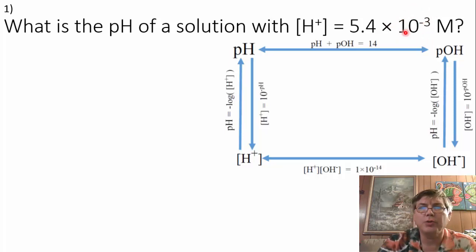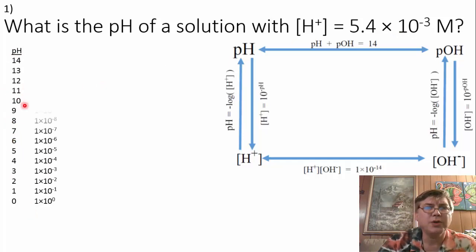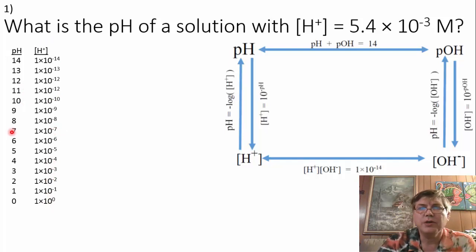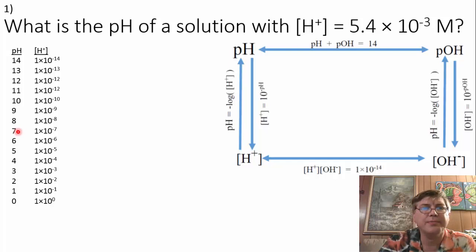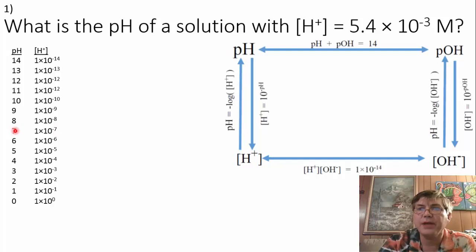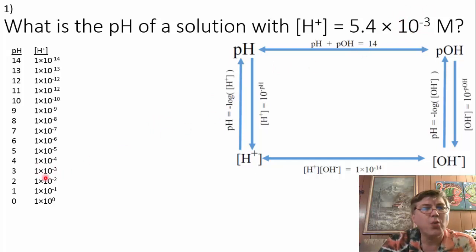You might remember when we did the foldable graphics organizer that we listed the pHs from 0 to 14 in the center and we also listed the hydrogen ion concentrations just to the right of that. You found that pH 7 matched up with the hydrogen ion concentration 1 times 10 to the negative 7. So the negative exponent — negative 7 — indicated that the pH was 7, just like pH 8 had a negative exponent in 1 times 10 to the negative 8. So if we look at 1 times 10 to the negative 3, that's a pH of 3, and we would expect 5.4 times 10 to the negative 3 to be somewhere around 3.